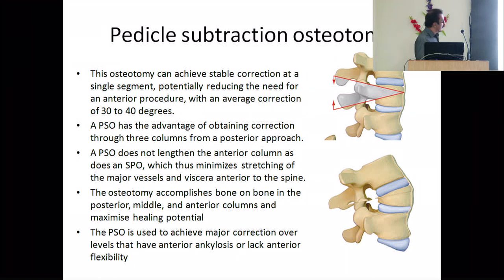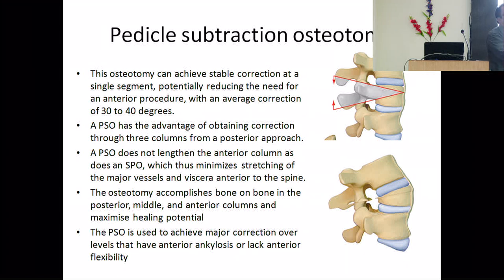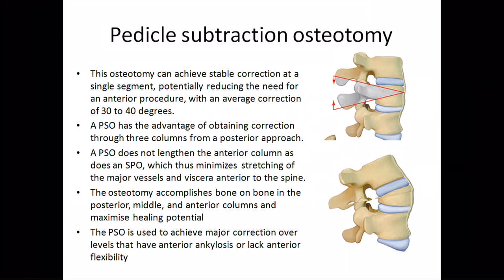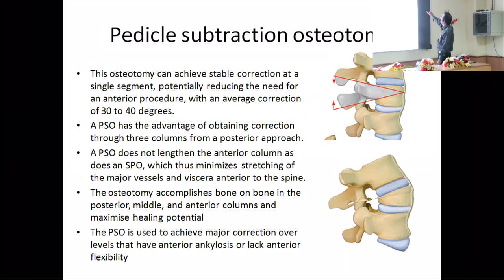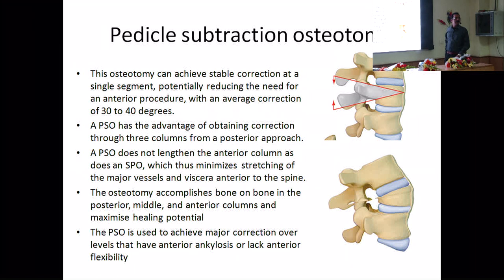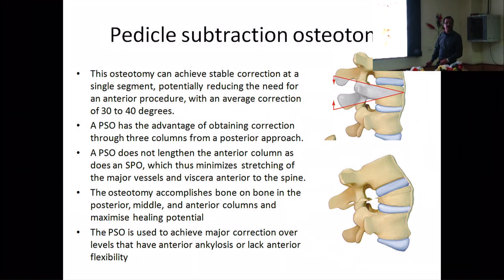PSO does not lengthen the anterior column. It doesn't matter whether there is anterior ankylosis or the anterior longitudinal ligament is calcified, because this is done inside the vertebral body — we are not dependent on the disc space. We are actually shortening the body in an angular fashion such that posterior shortening is more and anterior shortening is less, creating lordosis. You take more bone from posterior and less from anterior — close it and get the correct shape. You can achieve 30 to 45 degrees of lordosis with a single level.